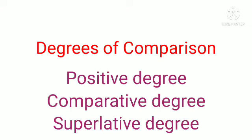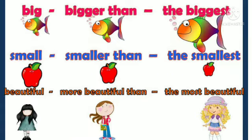There are three degrees of comparison: positive degree, comparative degree, and superlative degree. 'Big' is positive degree — kahin comparison ni hora, there is no comparison. But when I say that fish is bigger than this fish, bigger is comparative degree. And when I say the third one is the biggest one — biggest means sabhi misse sabse zyada — that is superlative.